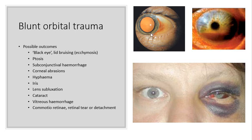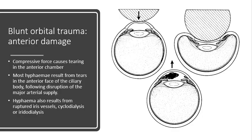There could be iris problems — for example, traumatic mydriasis, where the pupil is dilated as a result of the trauma. There can be lens subluxation where the lens moves out of place, and a cataract can appear. The patient can develop a vitreous hemorrhage and something called a commotio retinae — a bruised retina. They can also develop a retinal tear or a retinal detachment.